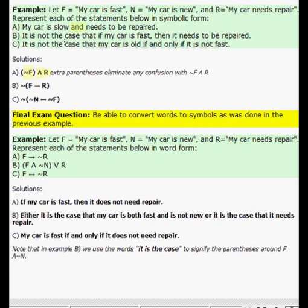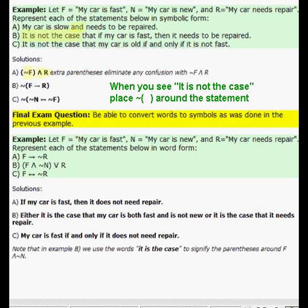Now in the second example, it is not the case that if my car is fast, then it needs to be repaired. When you see it is not the case, that means put a negation in parentheses around the whole works. So here the conditional is if my car is fast, then it needs to be repaired. That's F with an arrow pointing to R.